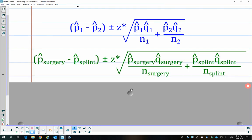So in our specific example, it looks something like this. I just added in the surgery and splint. And there's no real reason why I did surgery first other than I know that the p-hat for surgeries was larger. And so when I do this subtraction, I'm going to get a positive number. You can do it the other way. When it comes to interpreting your interval, you're just going to word it a little bit different.